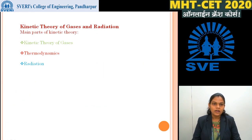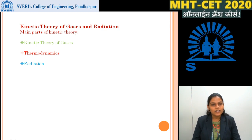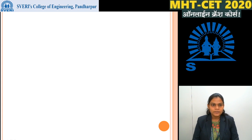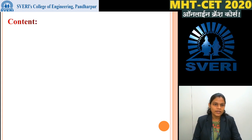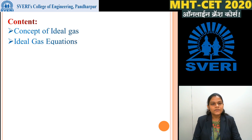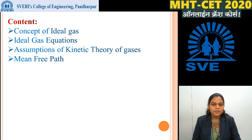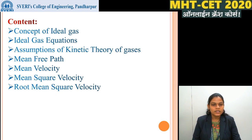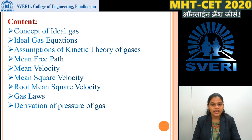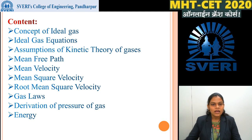In this chapter, the main parts of Kinetic Theory of Gases are Kinetic Theory of Gases, Thermodynamics and Radiation — three points you learn in 12th standard. The content of today's lecture are: Concept of Ideal Gas, Ideal Gas Equation, Assumptions of Kinetic Theory of Gases, Mean Free Path, Mean Velocity, Mean Square Velocity, Root Mean Square Velocity, Gas Laws, Derivation of Pressure of Gas and Energy. These all points we will discuss one by one.